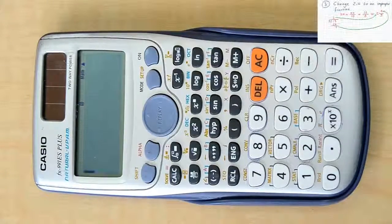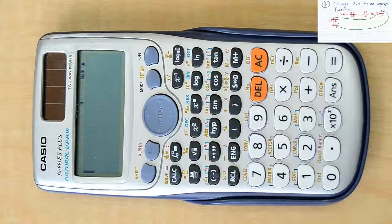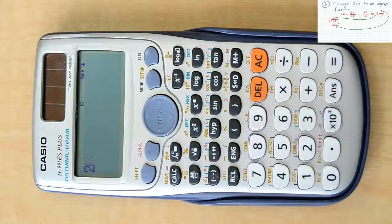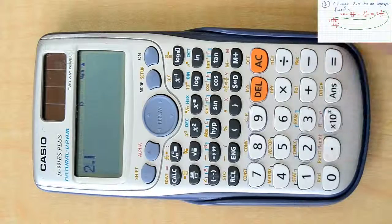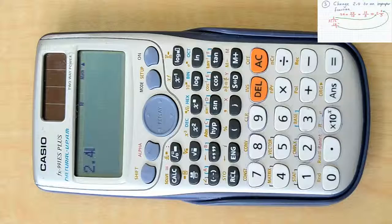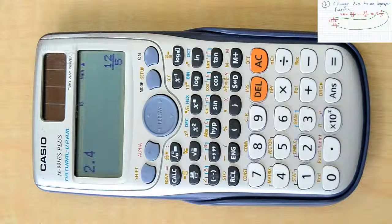Doing this with the calculator, just insert 2.4 in your calculator as it is. Then press equal. Directly, the calculator will give you 12 over 5.